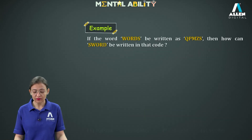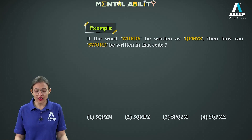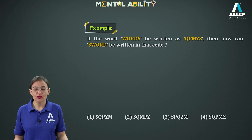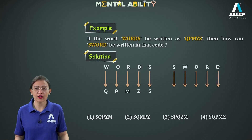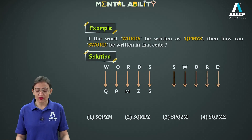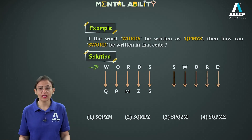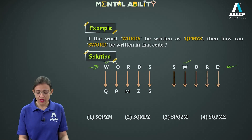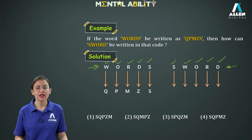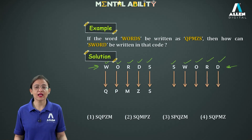Moving to the next one. If the word WORDS is written as QPMZS, then how can SWOT be written in that code? We need to find the code for SWOT. We observe that the letters of the given word WORDS and the word SWOT are exactly the same — W, O, R, D, S — so direct coding is there.